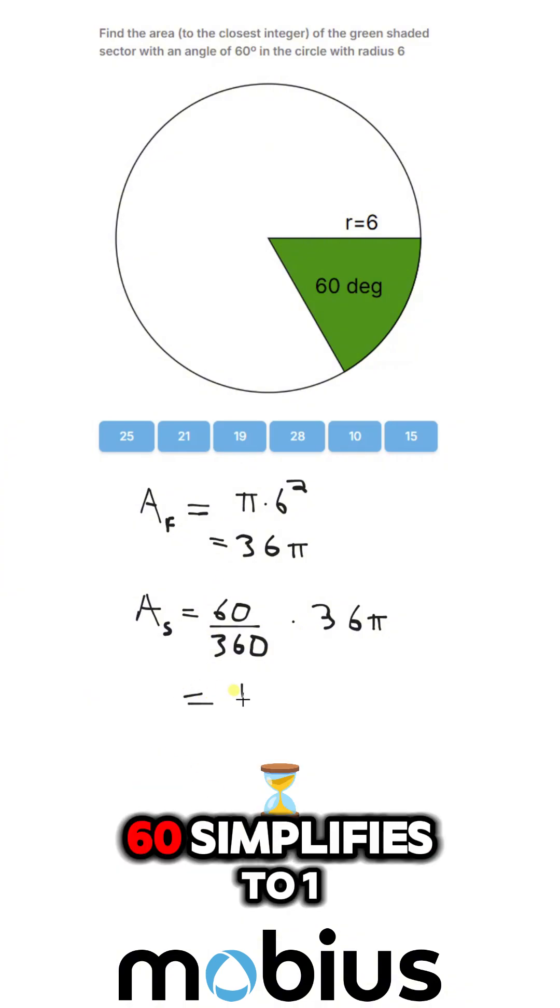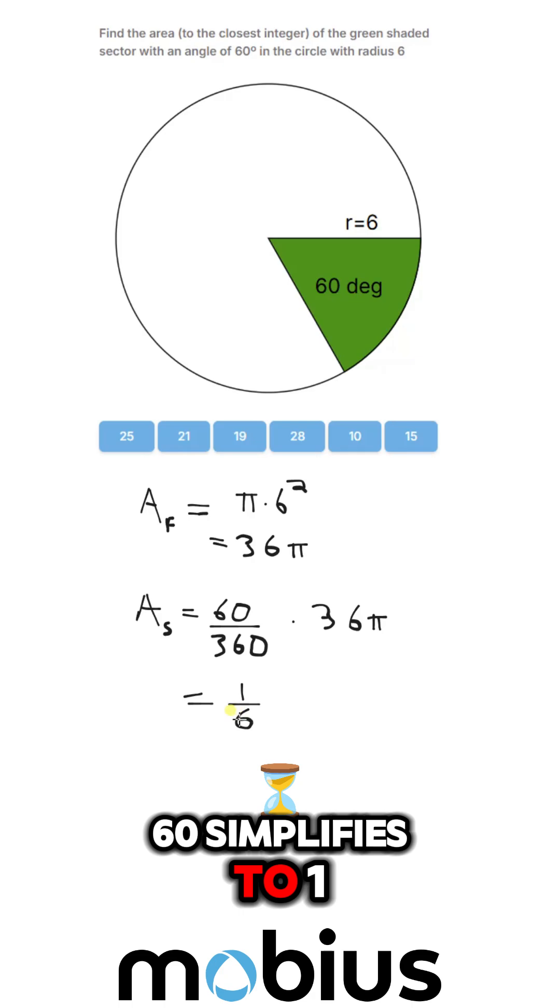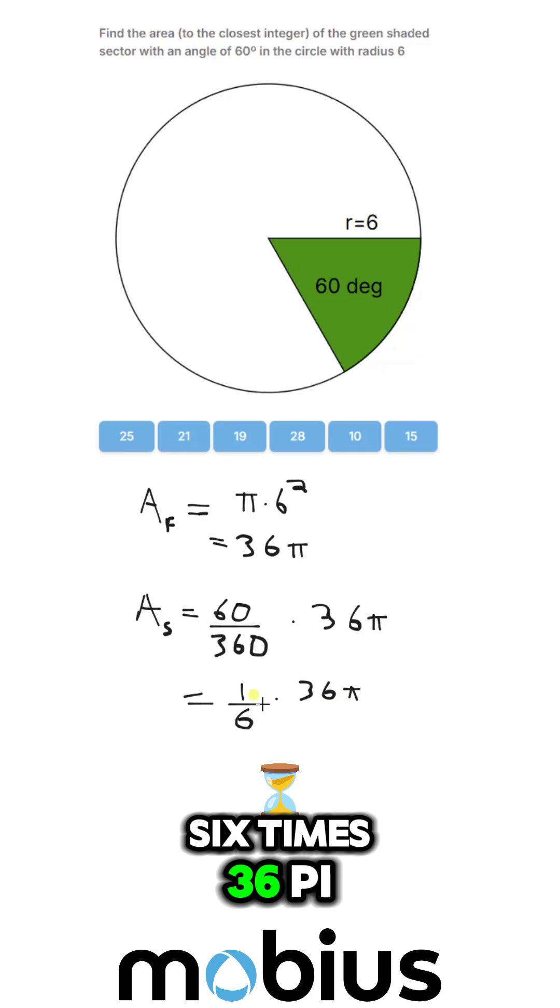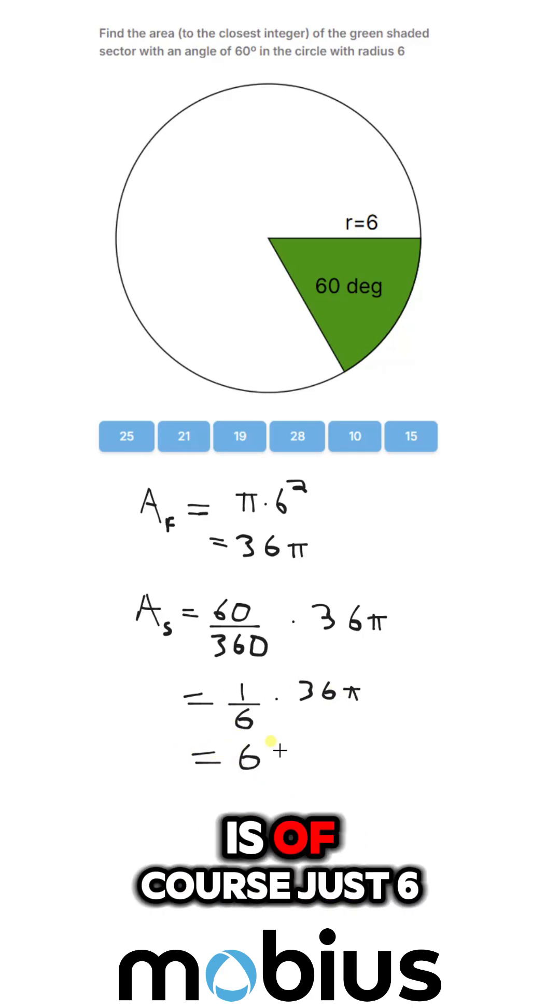And 60 over 360 simplifies to 1/6 times 36π. And 1/6 of 36 is, of course, just 6.